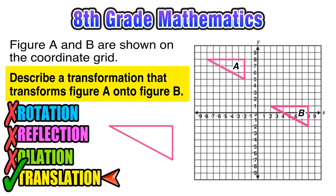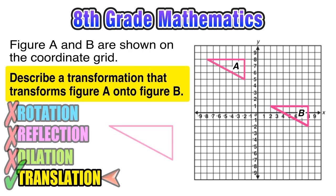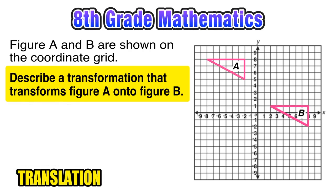So now we know that our transformation is a translation, and we can go ahead now with our description. We should know that we describe translations in terms of how many units up or down and how many units left or right. We can figure this out by picking one point on figure A. First, we'll count how many units to the right, so we see we're going over 10 units to the right.